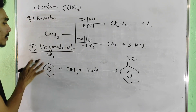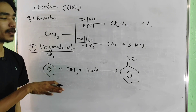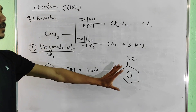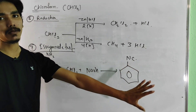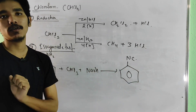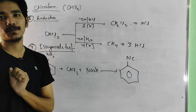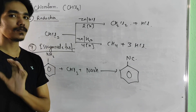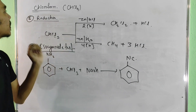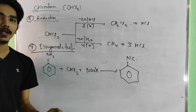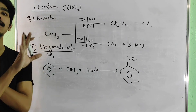Another reaction involves phenols. When chloroform is treated with phenol and NaOH or KOH, it gives ortho-hydroxybenzaldehyde formation. This part of the reaction involves putting chloroform with phenol to produce ortho-hydroxybenzaldehyde.